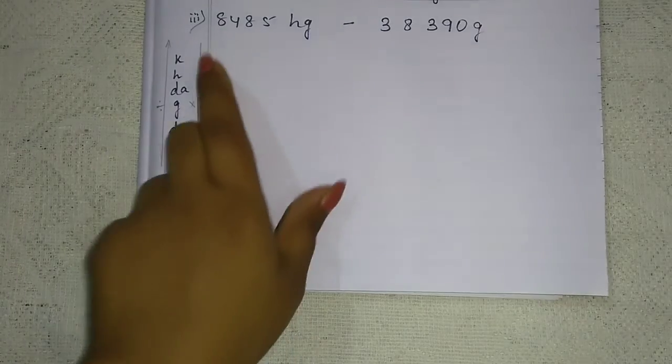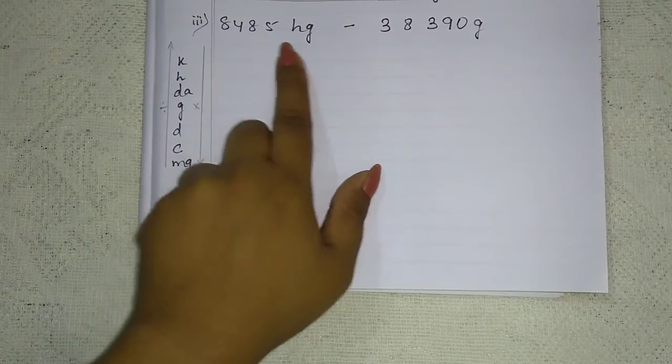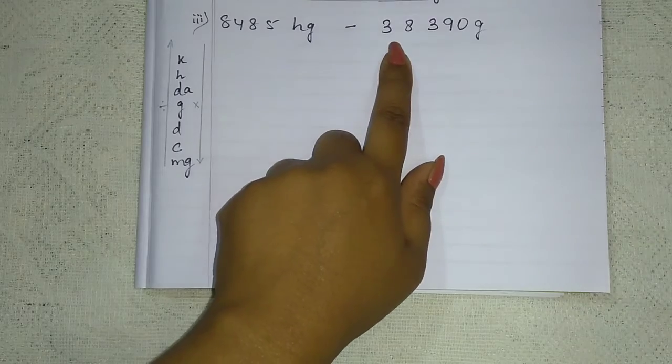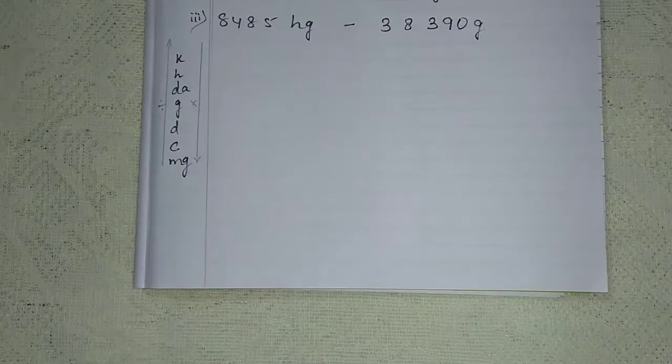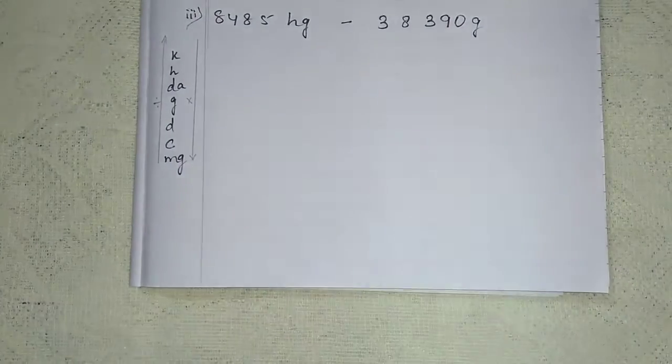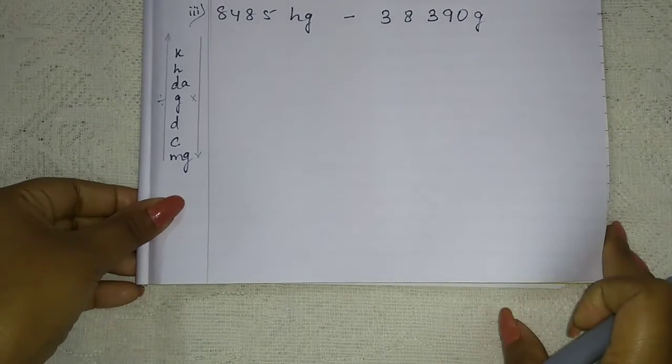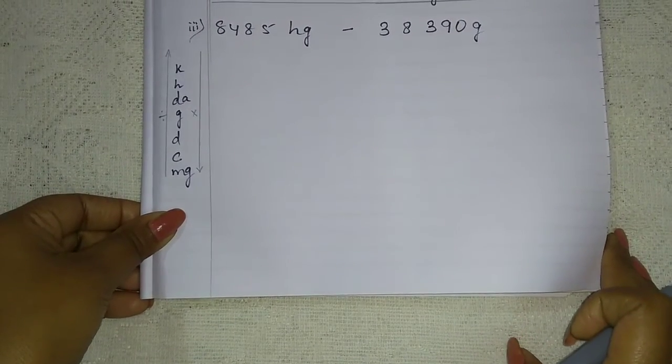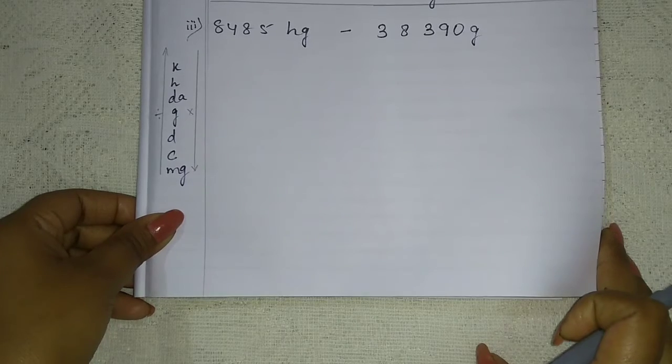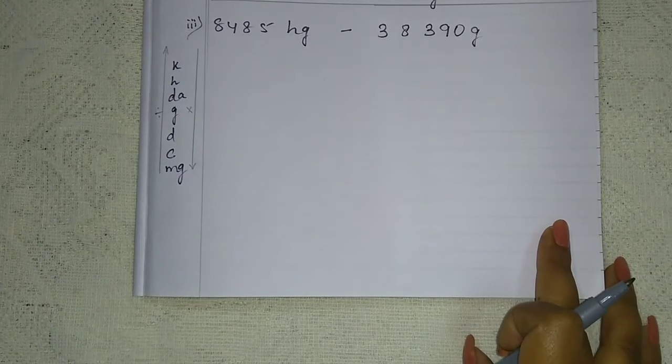So here you can see 8485 hectogram minus 38390 gram. Now you can see both are of different units. But here gram, there we have got a meter. The length we measure, it's a meter. Here gram, gram means weight.